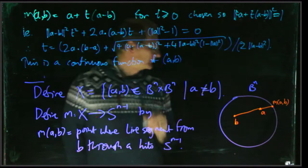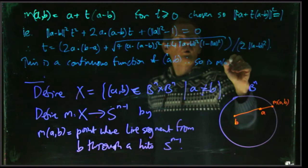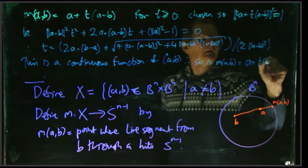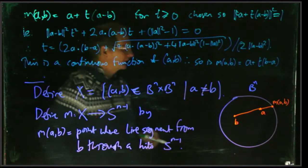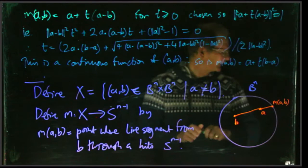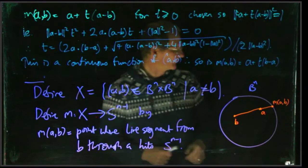So this is a continuous function, a well-defined continuous function of a, b. So t depends continuously on a and b, and therefore so does this m. So now we see that this map m here is a continuous map. And that's going to be an ingredient that we need in doing the proof of Brouwer's theorem.